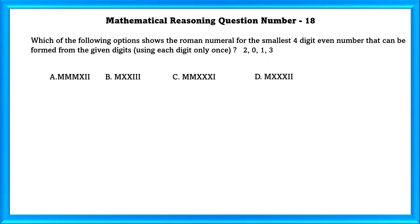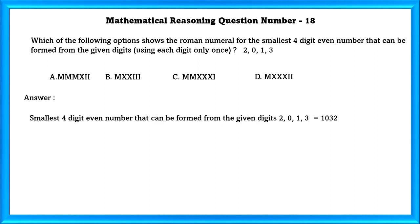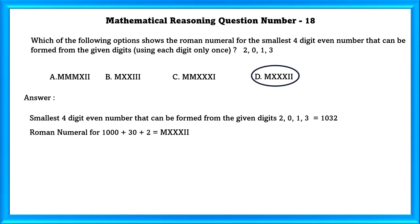Mathematical reasoning question number 18. Which of the following options shows the Roman numeral for the smallest four-digit even number that can be formed from the digits 2, 0, 1, 3, using each digit only once? The smallest four-digit even number that can be formed using these digits is 1032. The Roman numeral for this is MXXXII.